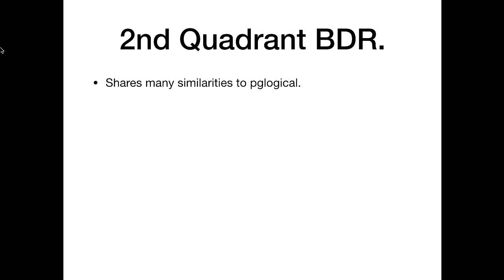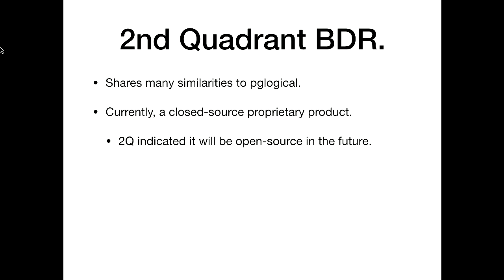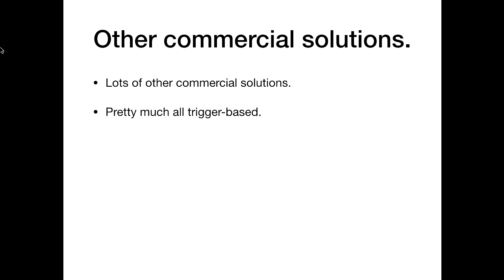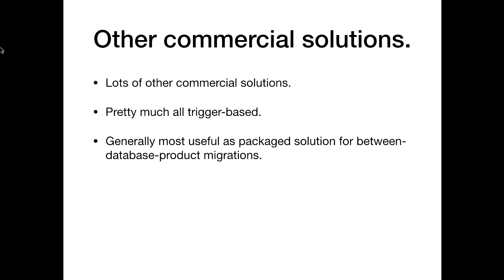Second Quadrant's bi-directional replication has many similarities to PG Logical because it's built on the same code. It's currently a closed-source proprietary product, but in the future it will be open-sourced. Its unique selling point is it can do bi-directional multi-master replication not just point-to-point, but across a grid — if you have a server in each continent and they all replicate to each other, it can do that. There are also lots of commercial solutions for replication — pretty much all trigger-based — generally useful as a package solution for database-to-database product migration, but not great for Postgres-to-Postgres where there are much better options.